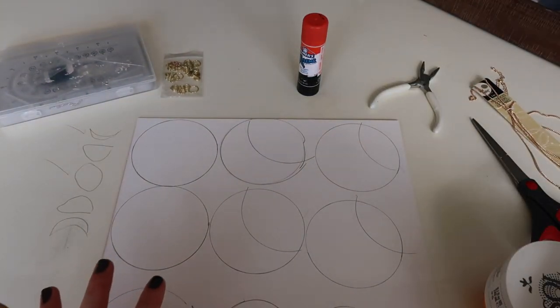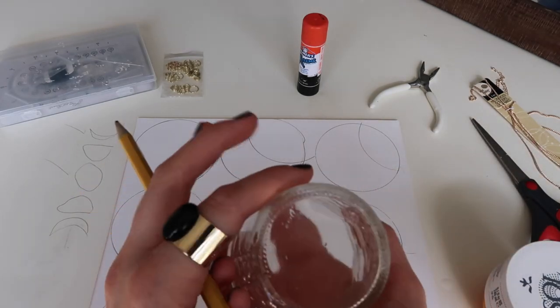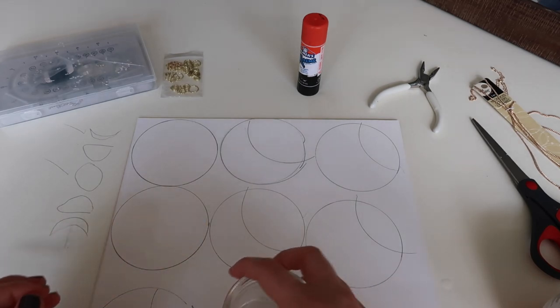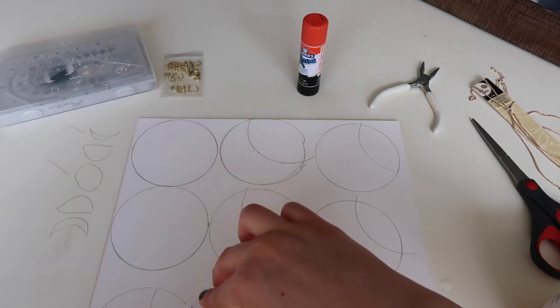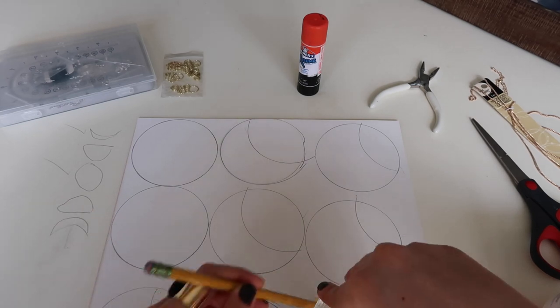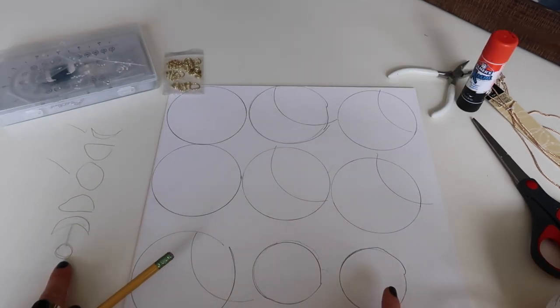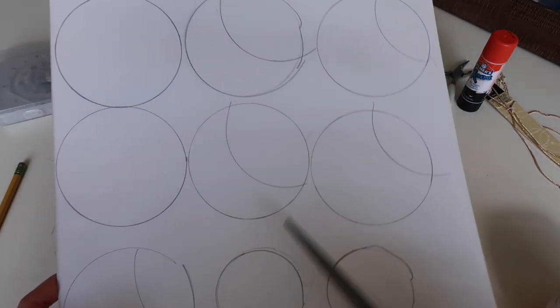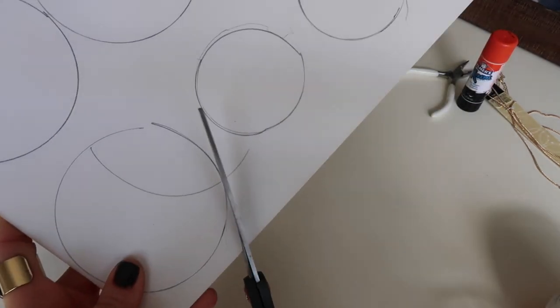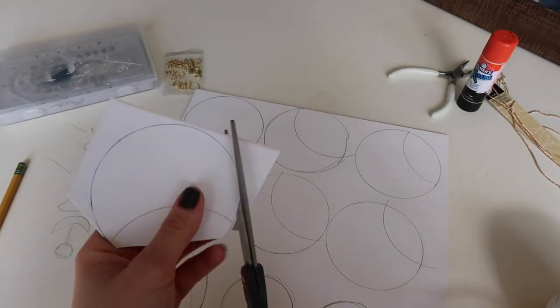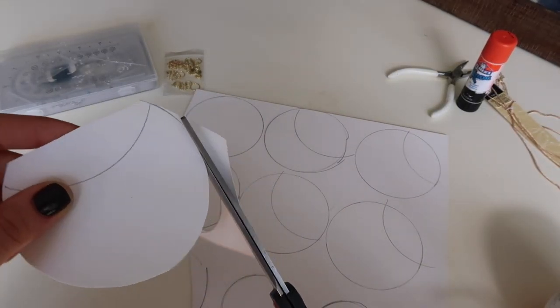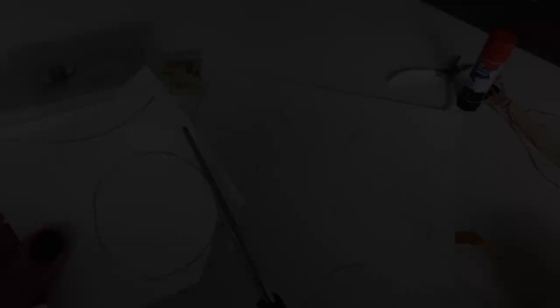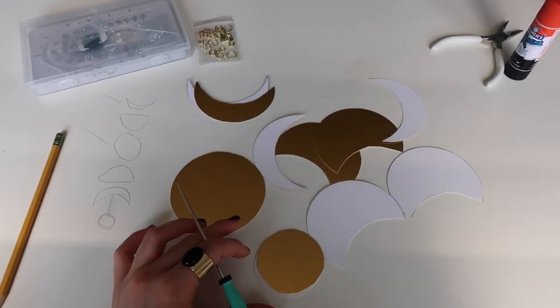After we're done drawing our moon parts, what we need to do is get another circle smaller than the one that we use for our moon and make two more of those. I'm gonna show you what we're gonna need this for in a second. The small circles are going to be this little part here at the bottom.